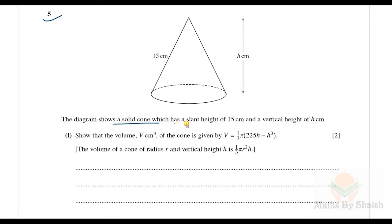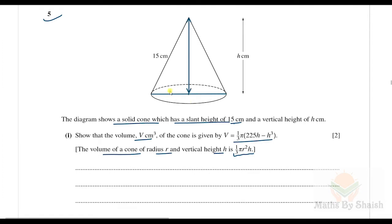The cone has a slant height of 15 cm and a vertical height h cm. We need to show that the volume V cm³ of the cone is given by the stated formula. The volume formula for a cone with radius r and vertical height h is one-third π r² h. Let me draw it — here is the radius r and this is h.